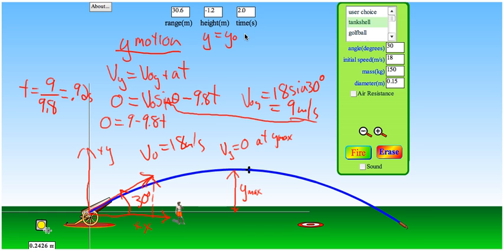Where y is y zero plus v zero yt plus one half at squared. And so now we're solving for y maximum. And so our initial y is zero. Our initial y velocity is 9. And the time 0.92.